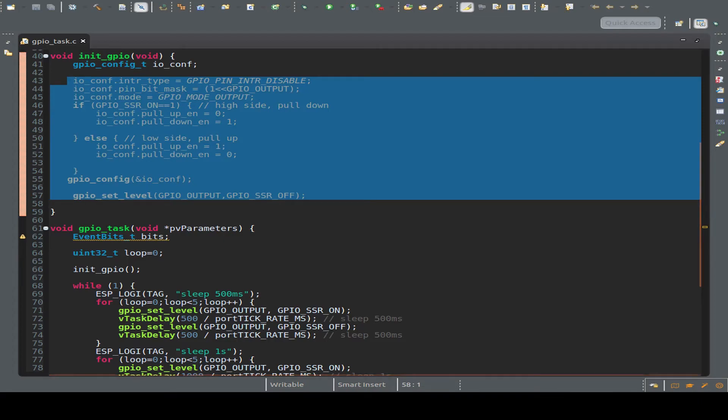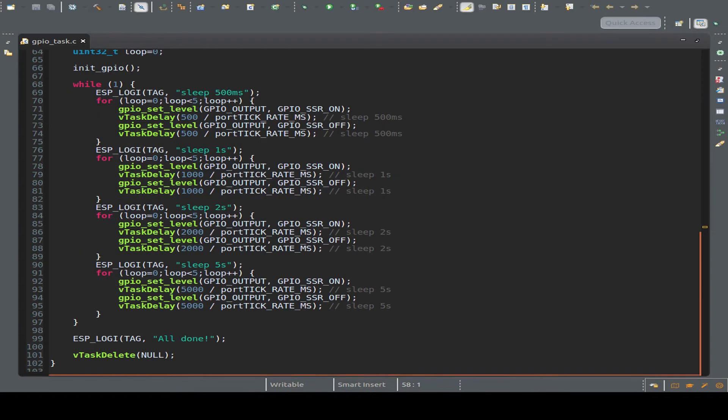And on the low side, I configure a pull up. And this is the endless loop. I just have five pulses of 500 milliseconds. Five pulses of one second, two seconds and five seconds. And that's it.